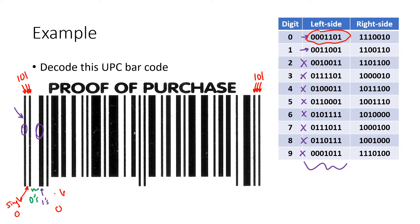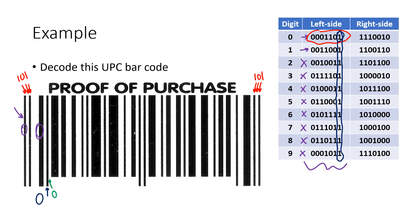It's a bit of a process to figure out that our first digit is zero. Every single one of the digits on the left-hand side is going to end with a one. So the very next space, starting with a zero, is the beginning of my next digit. My next digit starts with a single white space — a single zero — and then a big thick black bar, which is multiple ones. That double-wide bar represents two ones, and the next bar after that is wider still, so it's three or more ones.